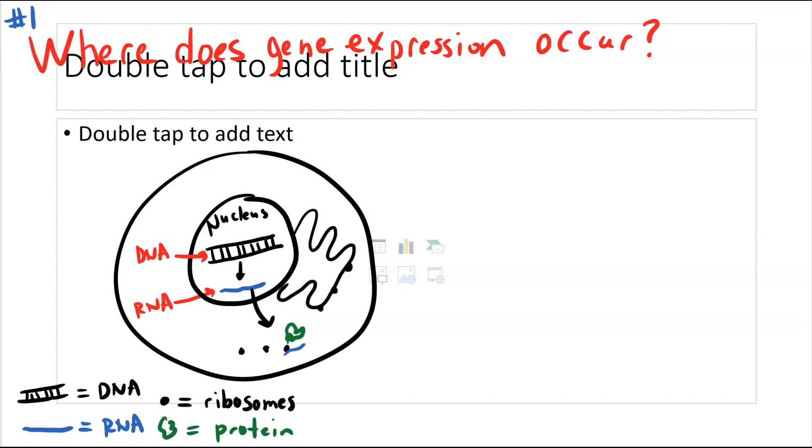So where does gene expression happen? Specifically, where does transcription and translation happen? If you look at this model cell here, you can basically see that we have the nucleus shown here, DNA is shown here. So because DNA is the template for transcription, you're going to see transcription that is converting DNA into RNA shown here. We're going to be seeing transcription in the nucleus.